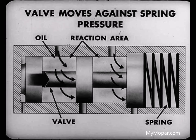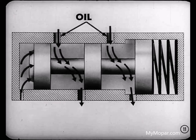Movement of the valve can be controlled by admitting oil to one or more of the reaction areas, moving the valve against spring pressure. This will permit oil entering the valve body from one direction to be routed out of the valve body in another direction.